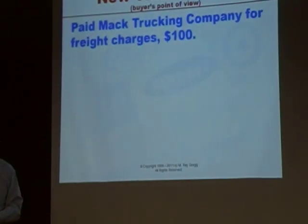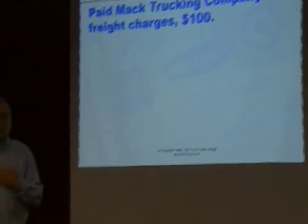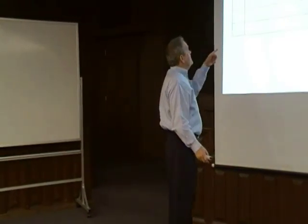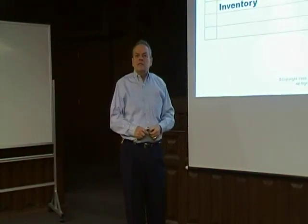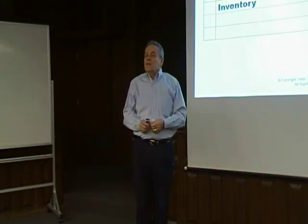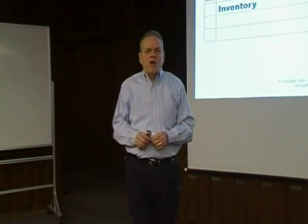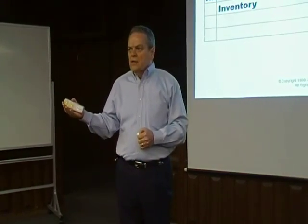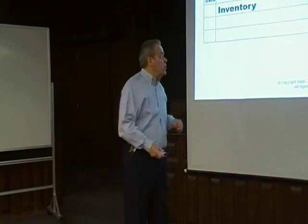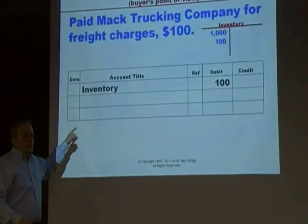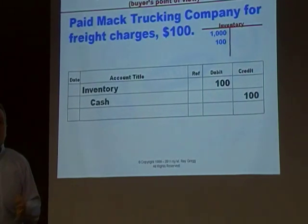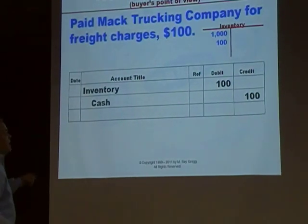When the truck driver wants to be paid and we're the buyer with FOB shipping point, we debit inventory and credit cash. This is perpetual inventory — the cost principle applies: the cost of these goods is not just the invoice price but also includes freight costs incurred to acquire them. Under perpetual procedures, freight paid to acquire goods is debited to inventory — it becomes part of the cost of the product.